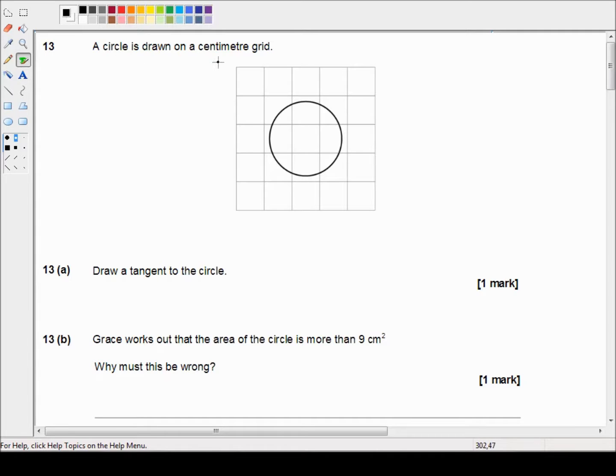It reads: a circle is drawn on a centimeter grid. Part 13A says draw a tangent to the circle. Okay, well that's fairly straightforward.